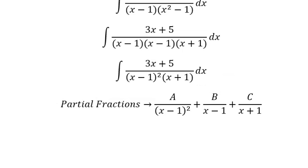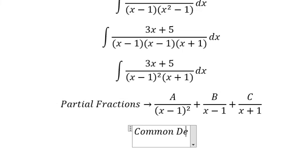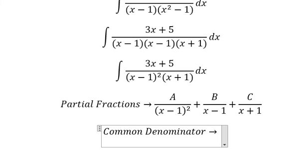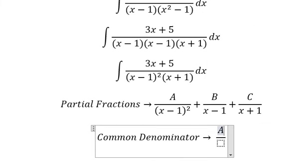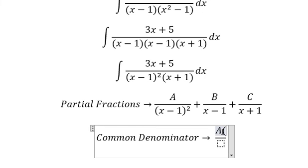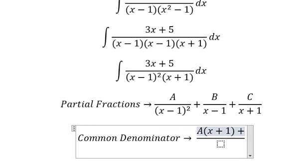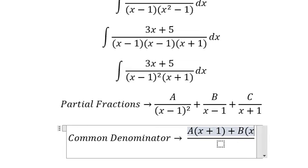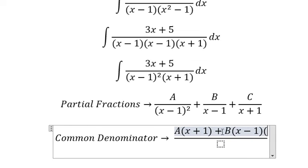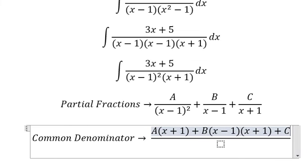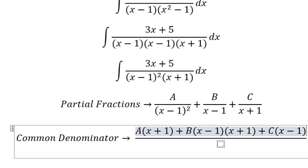We need to use a common denominator. So we have A multiplied with (S+1), B multiplied with (S-1)(S+1), and C multiplied with (S-1) squared.